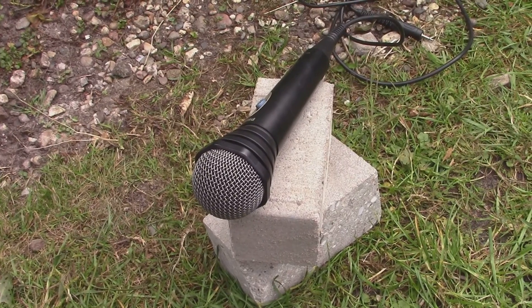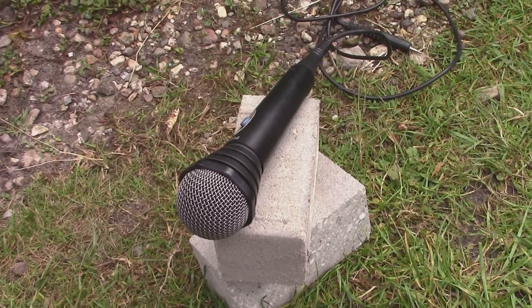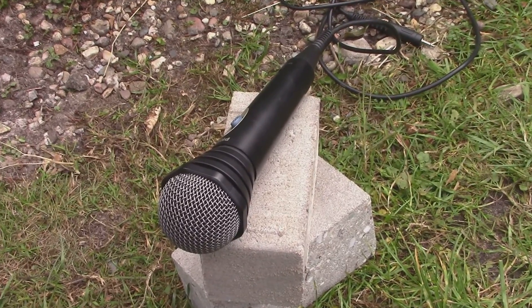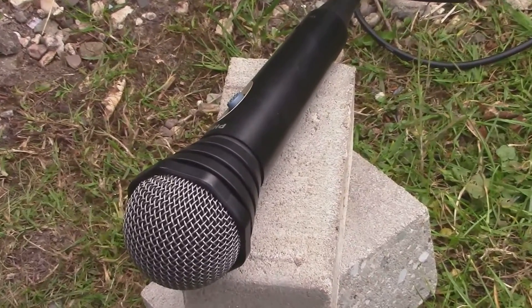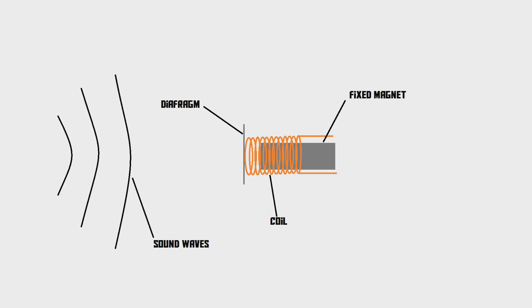The first type of microphone we're going to talk about is the dynamic microphone. The dynamic microphone is the typical stage microphone. Inside the microphone, the first thing we see is the diaphragm — it's a thin sheet of plastic, really nothing more than that. Connected to the diaphragm, there is a coil of copper wire, and inside the coil we've got a magnet.